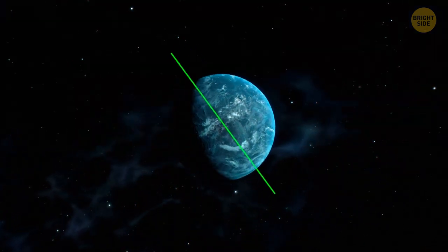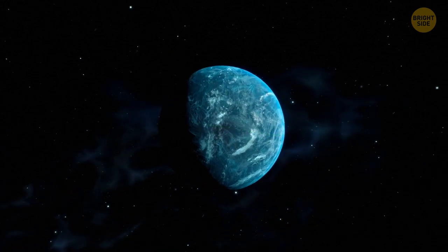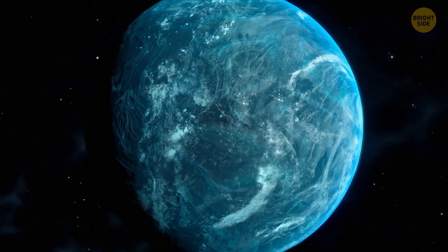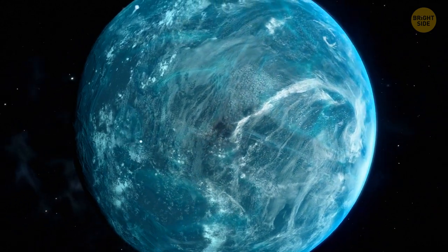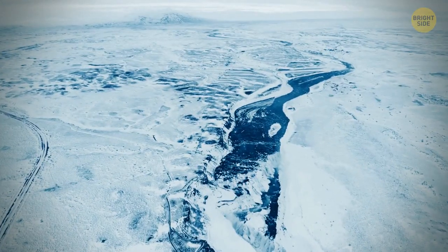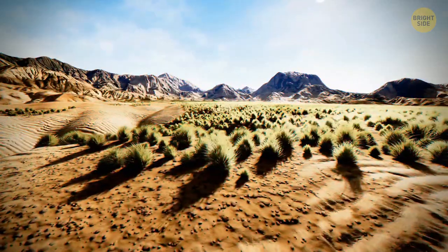So, if Kepler-22b is really something like that, then the weather on the planet will be, to put it mildly, not very good. Incredibly cold winters will be regularly followed by hot summers.